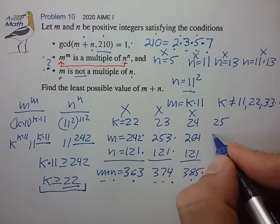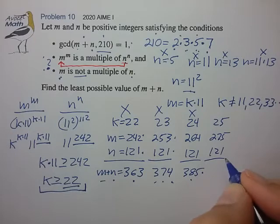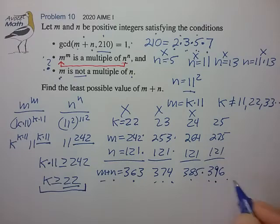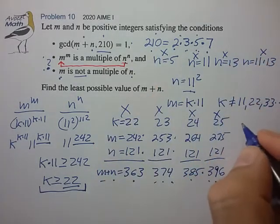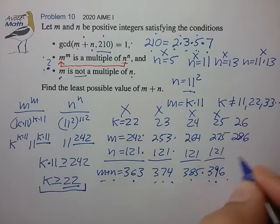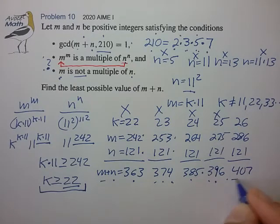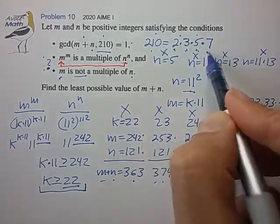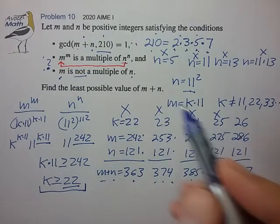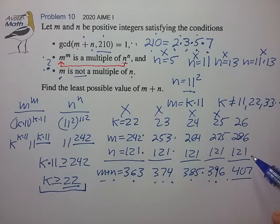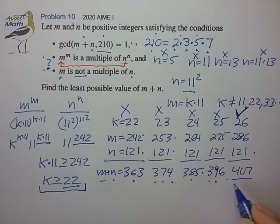If we let k is equal to 26, then m is 286, n is 121, the sum 407. That looks promising. This does not share a factor with 2, 3, 5, or 7, so it satisfies the first condition. m is a multiple of n, it satisfies the second condition. m is not a multiple of n, so it satisfies the third condition. So this is our answer, 407, m plus n.